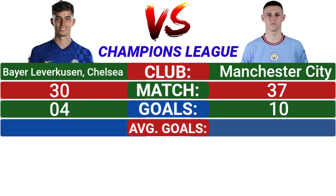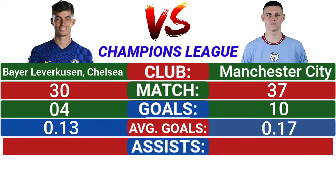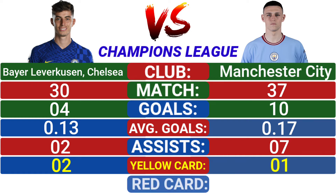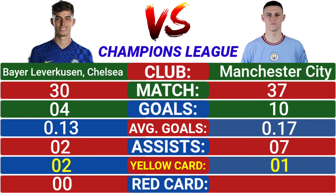Havertz's average goals per match is 0.13, and Phil Foden's average goals per match is 0.17. Havertz provided 2 assists and Phil Foden provided 7 assists. Havertz received 2 yellow cards and 0 red cards, while Phil Foden received 1 yellow card and 1 red card.